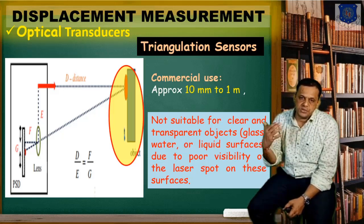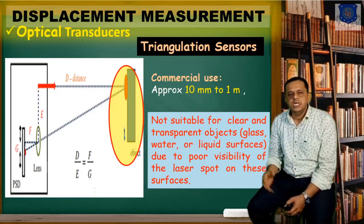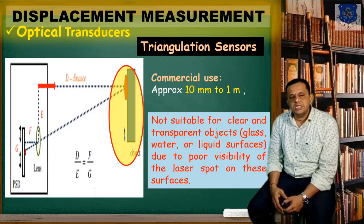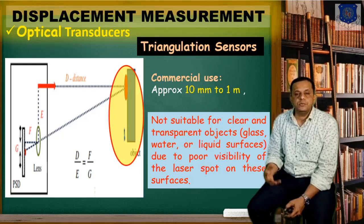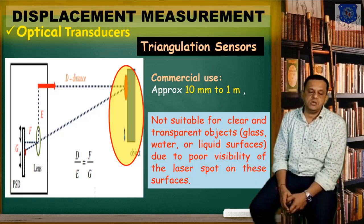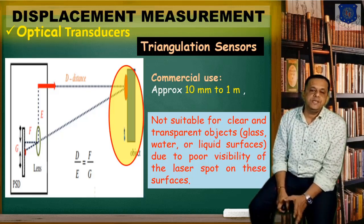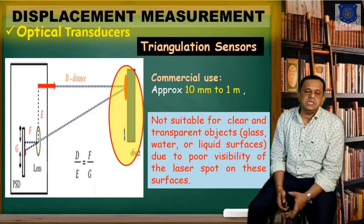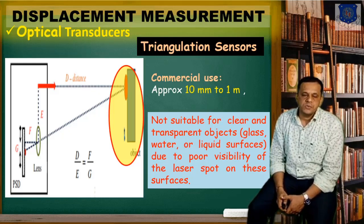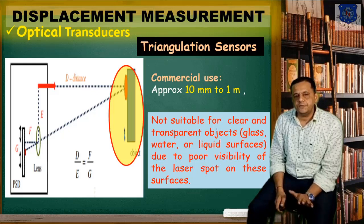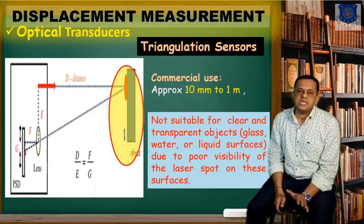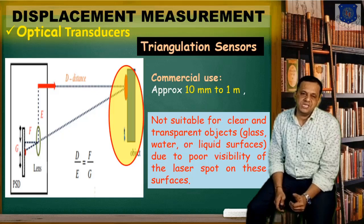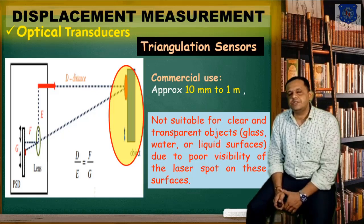Commercially, the triangulation sensor is used for a range of 10mm to 1 meter. It is not suitable for clear and transparent objects such as glass, water, or liquid surfaces, because transparent objects do not reflect the full amount of light, making the laser spot visibility on the PSD very poor. As a result, the distance cannot be detected, so if the object is transparent, this type of sensor cannot be used.